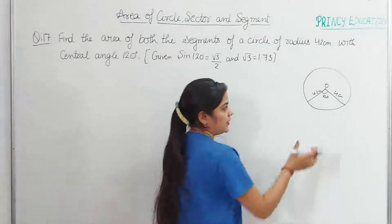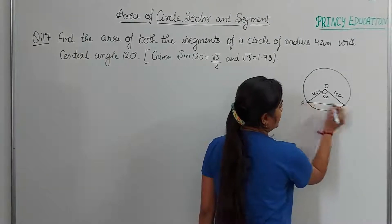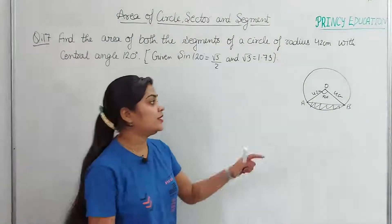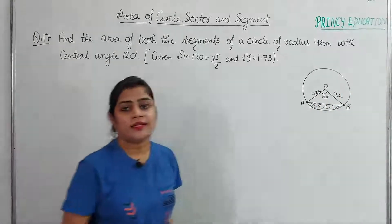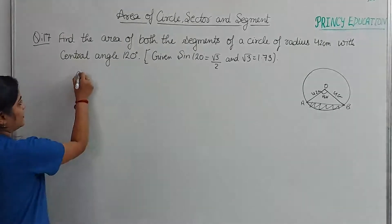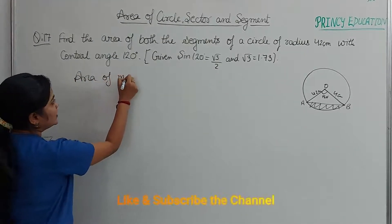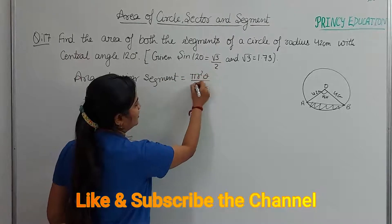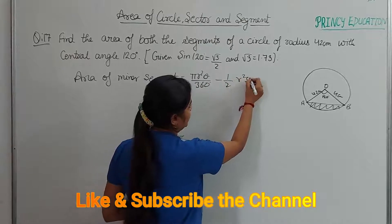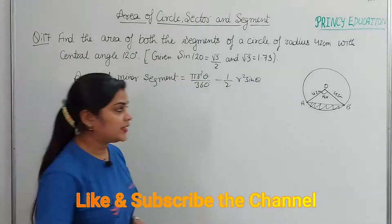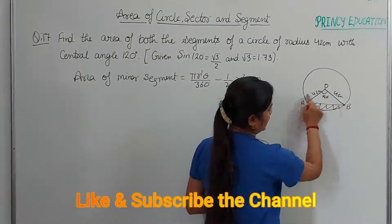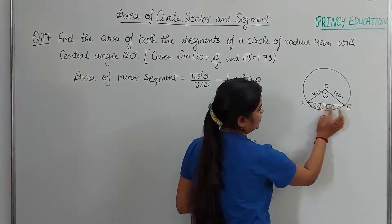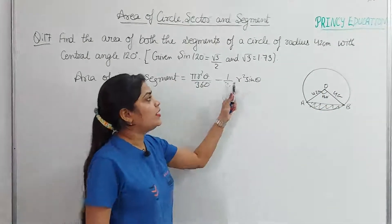The chord AB divides the circle into two parts. The small arc and the chord form the minor segment, while the large arc and the chord form the major segment. The formula for the area of the minor segment is: pi r² × (theta/360) minus (1/2) r² sin theta. The sector area is pi r² theta upon 360, and the triangle area is (1/2) r² sin theta.